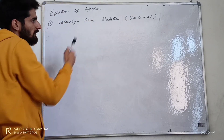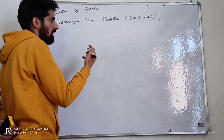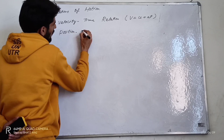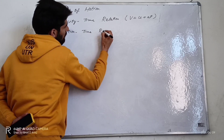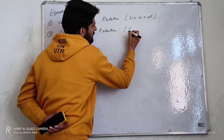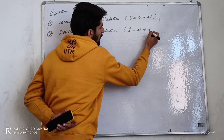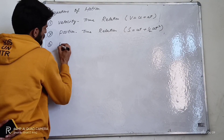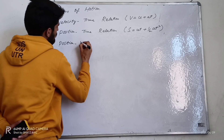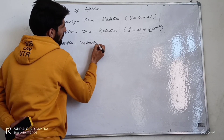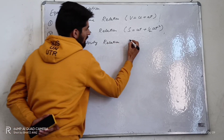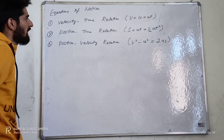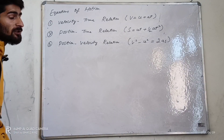These are some variables which we have already discussed in the glossary. The second one is the position-time relation: s is equal to ut plus one half of at squared. The third one is the position-velocity relation: v squared minus u squared is equal to 2as. These are the three most important equations of motion.